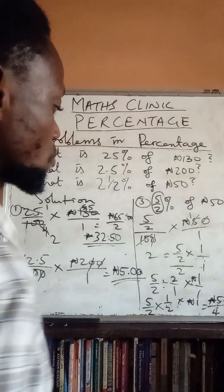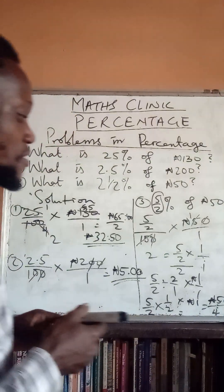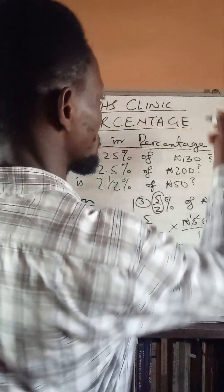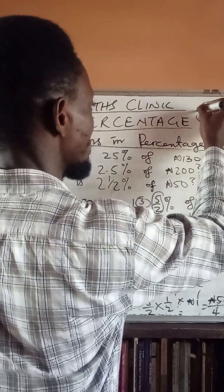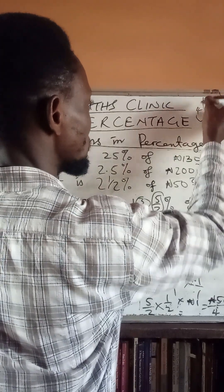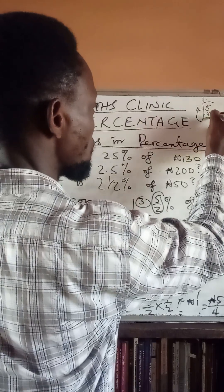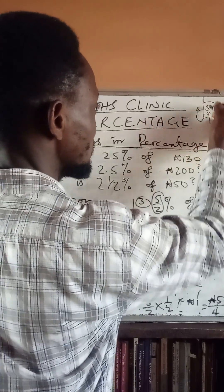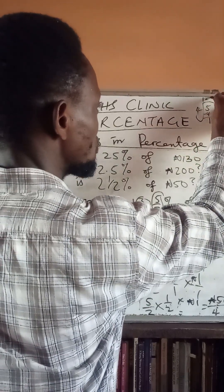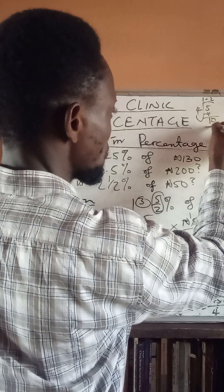We can't leave the answer as 5 over 4 since we're dealing with naira and kobo, so we use long division: 5 divided by 4. 4 into 5 gives 1, put the decimal point; 1 times 4 is 4, take 4 from 5 gives 1; add a zero making it 10; 4 into 10 gives 2; 2 times 4 gives 8; 10 minus 8 gives 2.